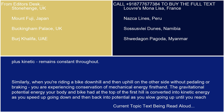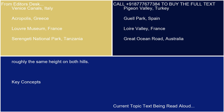Similarly, when you're riding a bike downhill and then uphill on the other side without pedaling or braking, you are experiencing conservation of mechanical energy firsthand. The gravitational potential energy at the top of the first hill is converted into kinetic energy as you speed up going down, and then back into potential energy as you slow going up, until you reach roughly the same height on both hills.